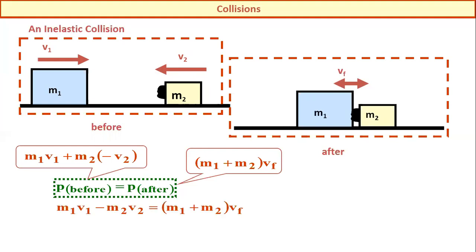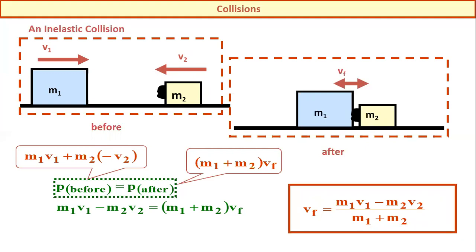After collision, the masses combine as m1 + m2 with total final velocity vf. We write: m1v1 − m2v2 = (m1 + m2)·vf. Therefore the final velocity is vf = (m1v1 − m2v2) / (m1 + m2). That is the equation for final velocity in an inelastic collision.